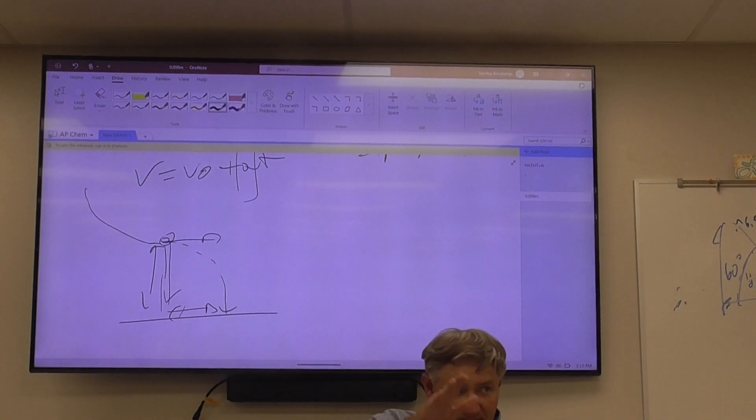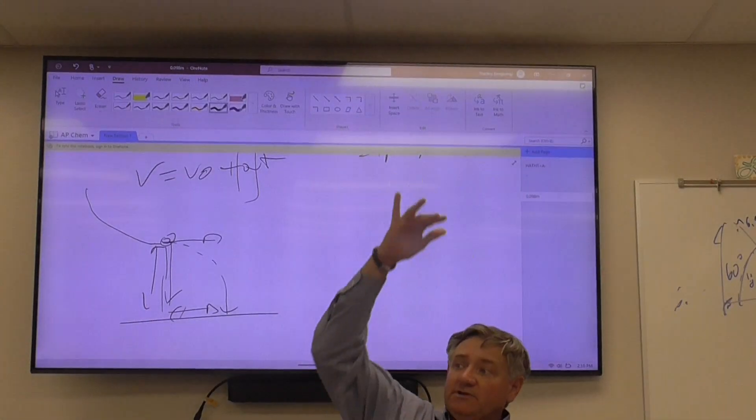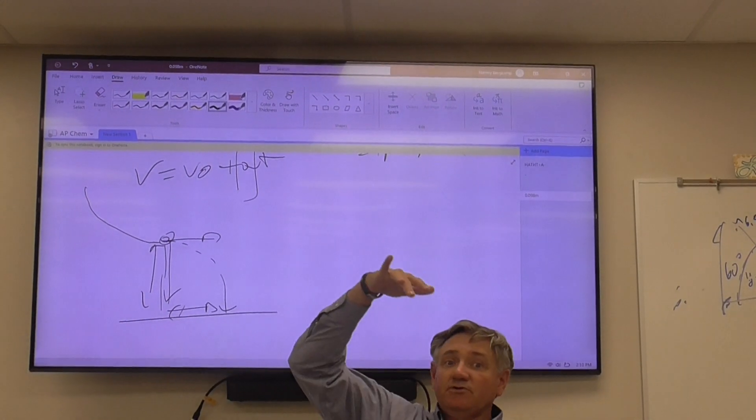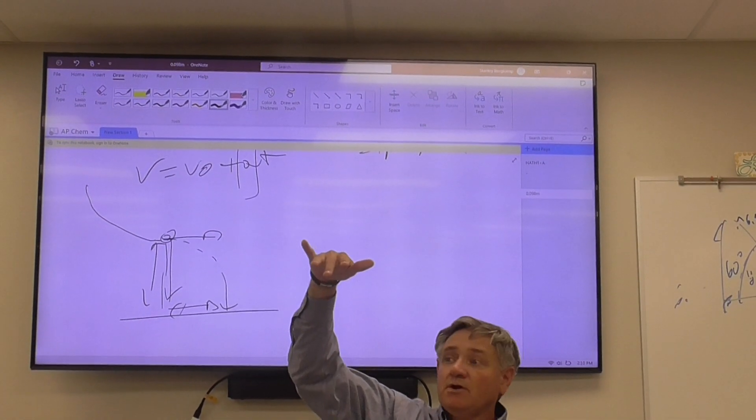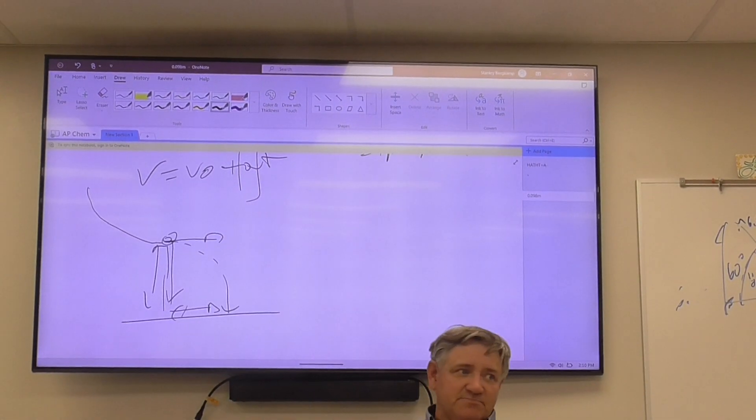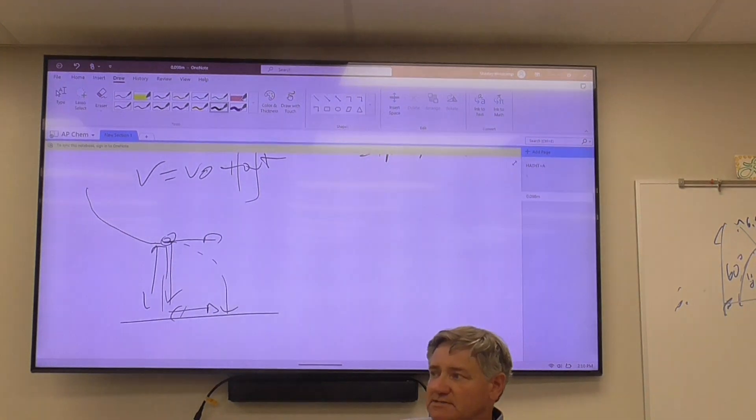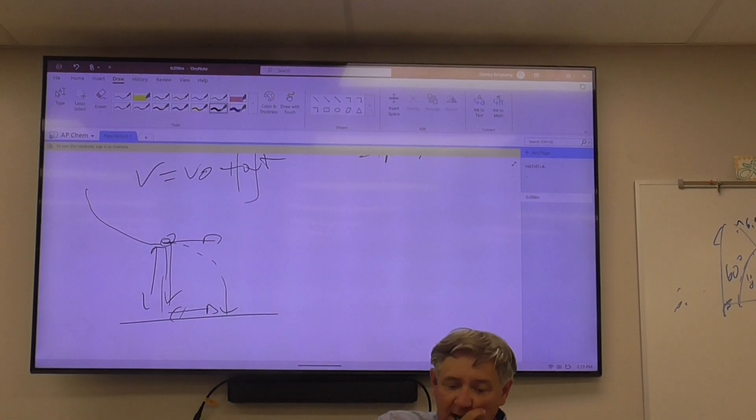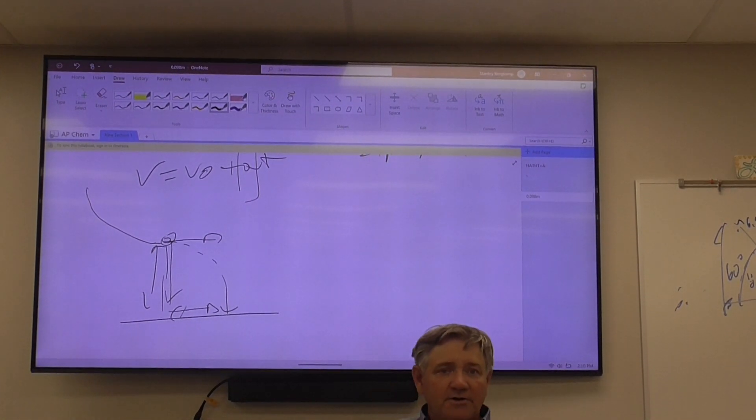Then we're going to go back to the original setting, and we're going to double the height. Again, you can either do smash-mouth physics, recalculate the values, or just say it's going to increase by the square root of pi, or whatever you think is going to happen. All right, I'm done. You're on your own.